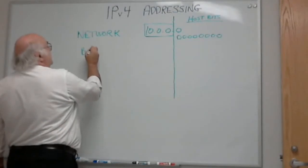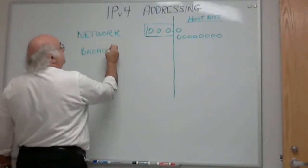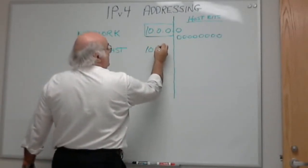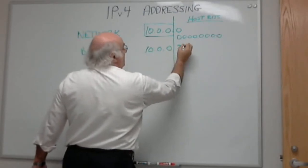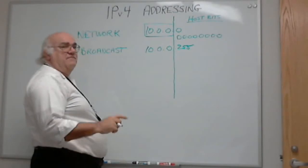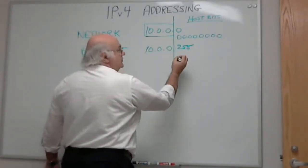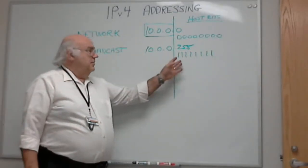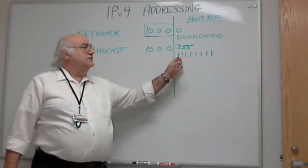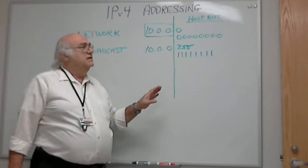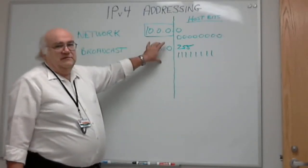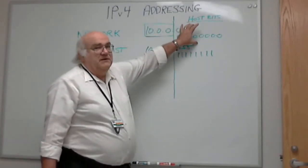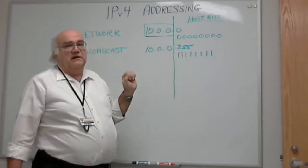The next type of address is a broadcast. If all the ones are turned on in the host portion, and by reviewing your binary-decimal conversion you'll see that equals 255, that is considered a broadcast address. So: all host bits off is a network address, and all host bits on is a broadcast address.